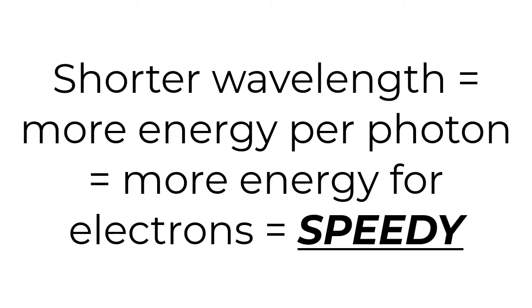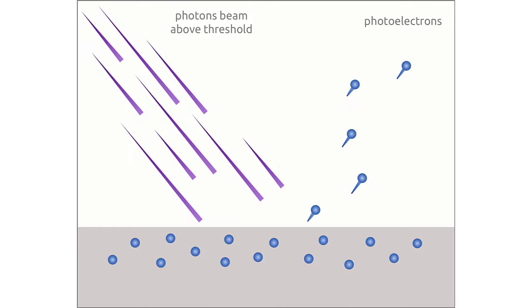Less wavelength equals more energy per photon equals more energy for the electrons equals faster electrons. If the electrons get enough energy, they can go fast enough to escape the metal they were in.